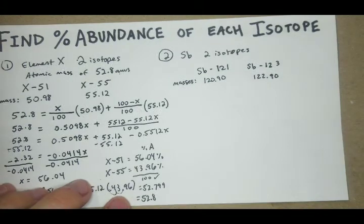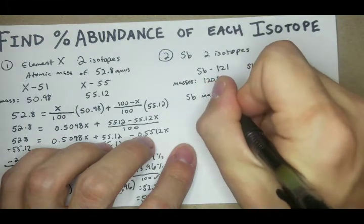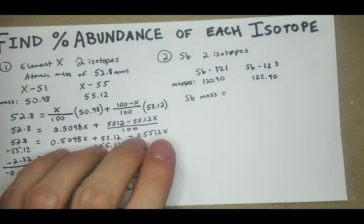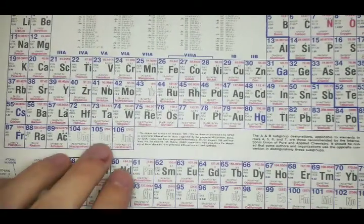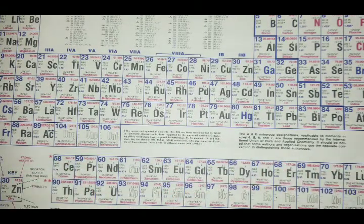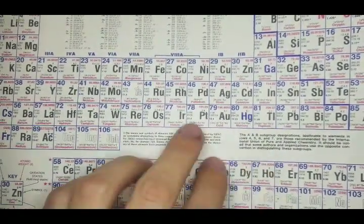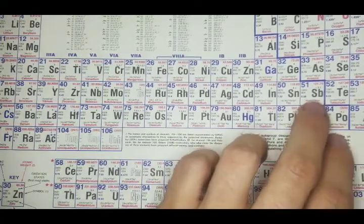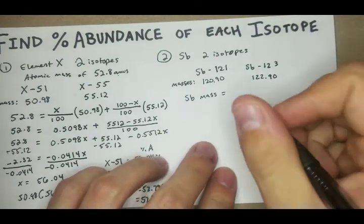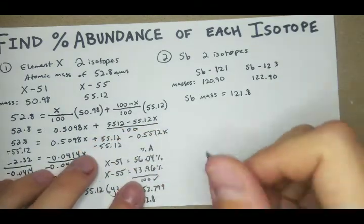We will know that the antimony mass on the periodic table should be, antimony is 121.75. We'll round that up to 121.8, and that will be what we're going to work from.